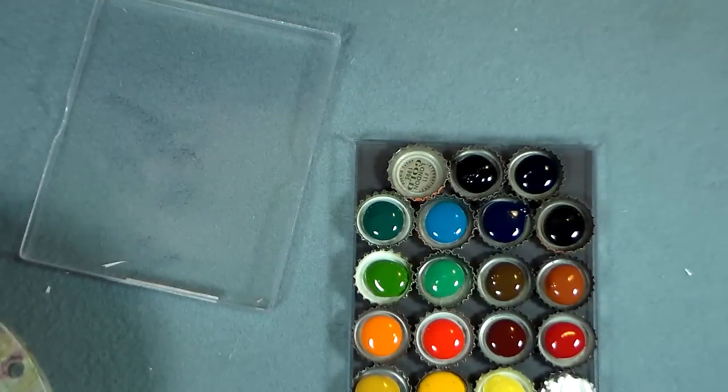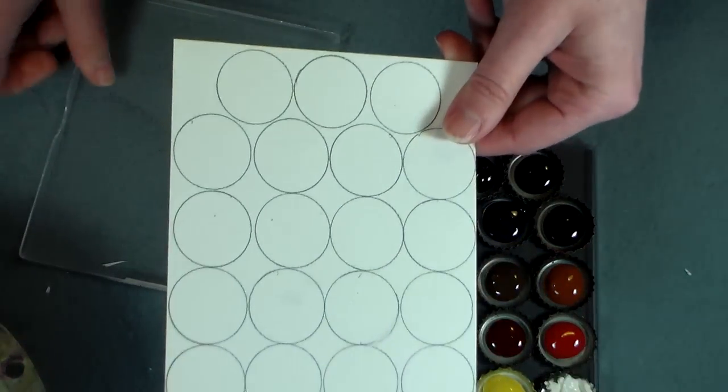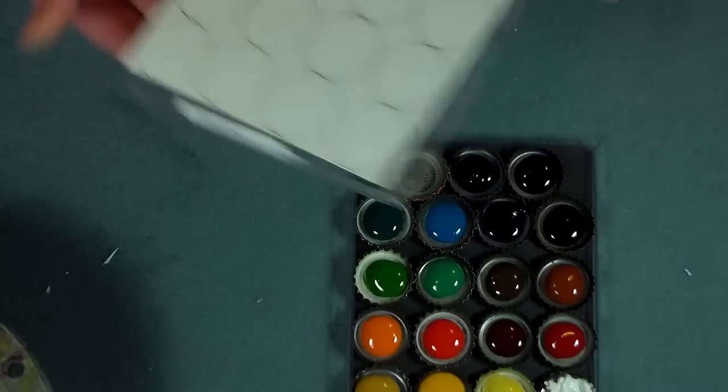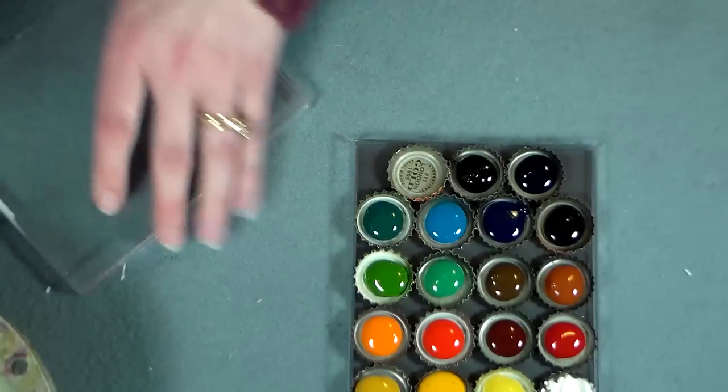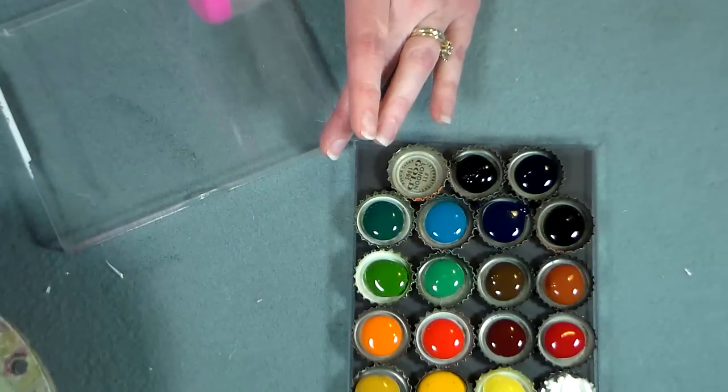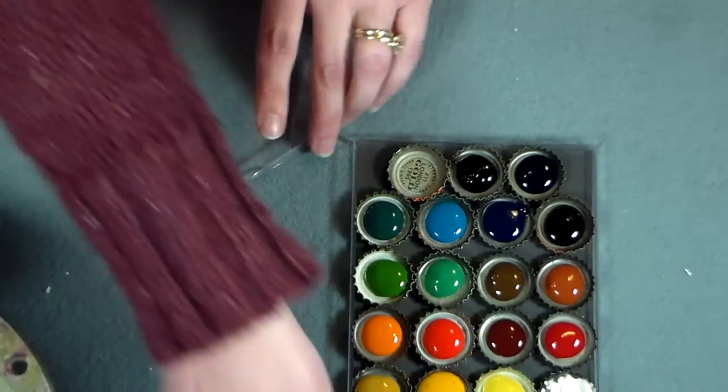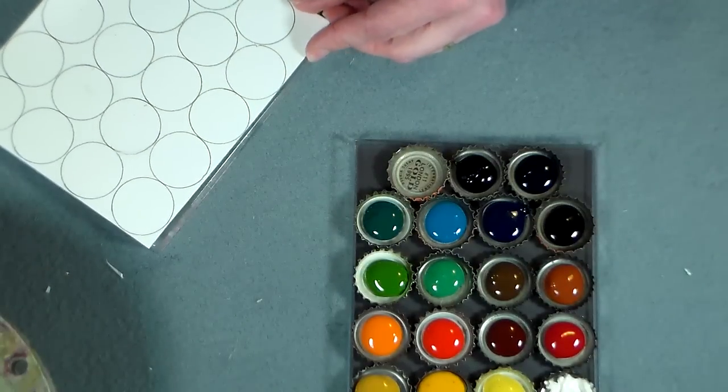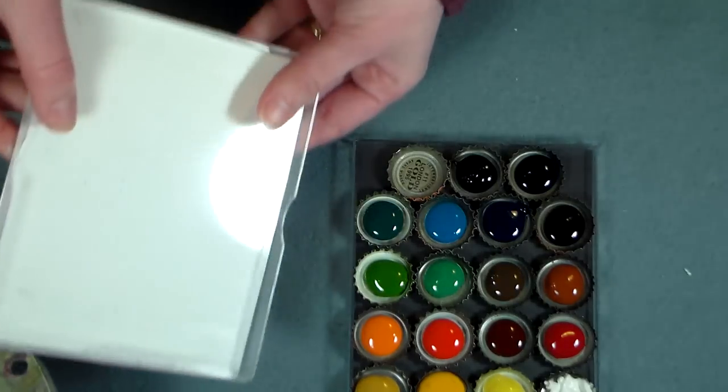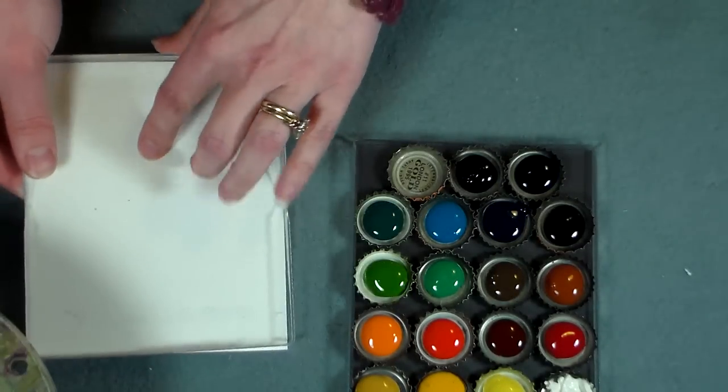Alright so I'm gonna take the piece of watercolor paper that I traced the circles on, I'm gonna tape it to the outside of the lid, that way when we use the watercolors we'll have a white inside to mix on.